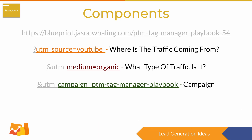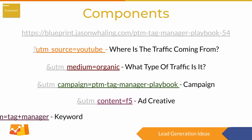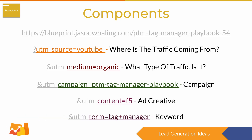The next element is content, and content tells you the specific ad, video, or social post that the traffic came from. Then we have term, which allows you to tell Google Analytics the keyword. You're probably not going to use term very much unless you're doing pay-per-click advertising that's targeting keywords.